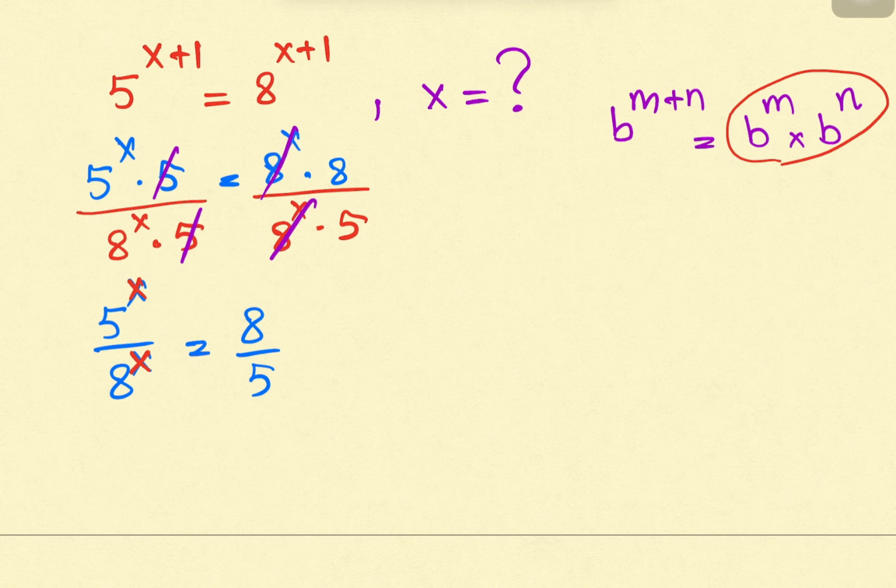We must know another exponent rule. This rule is a over b raised to n equals a raised to n over b raised to n. We can change from right to left.